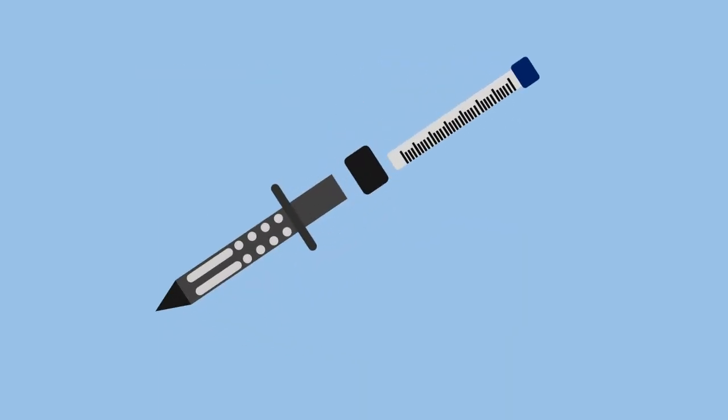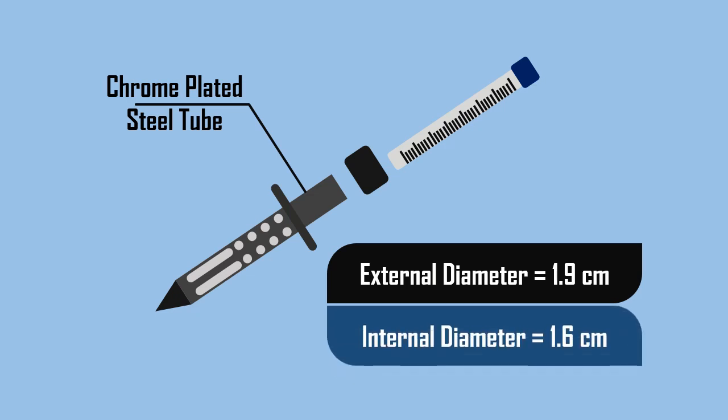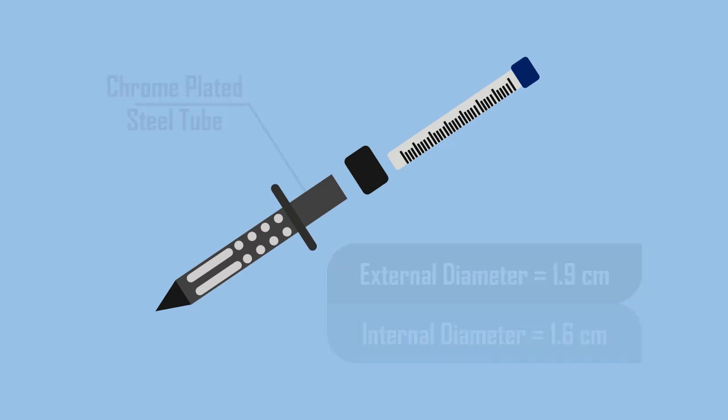The apparatus consists of a chrome plated steel tube with external and internal diameters of 1.9 and 1.6 cm respectively. The length of the tube is 25 cm.